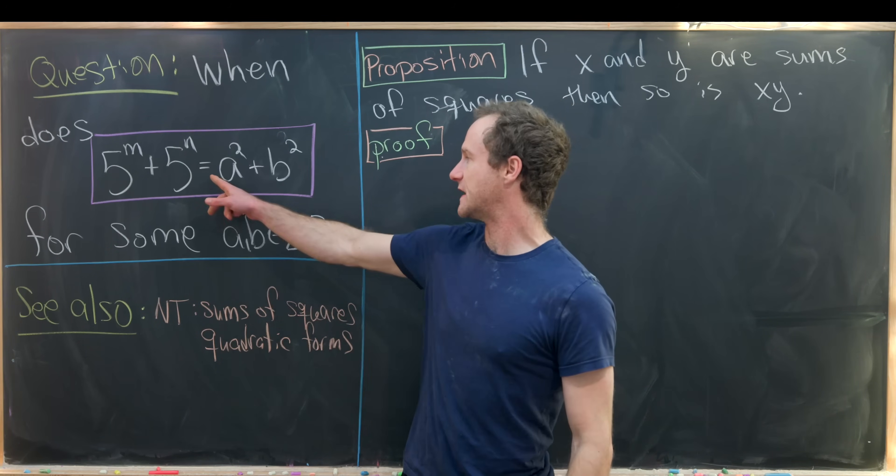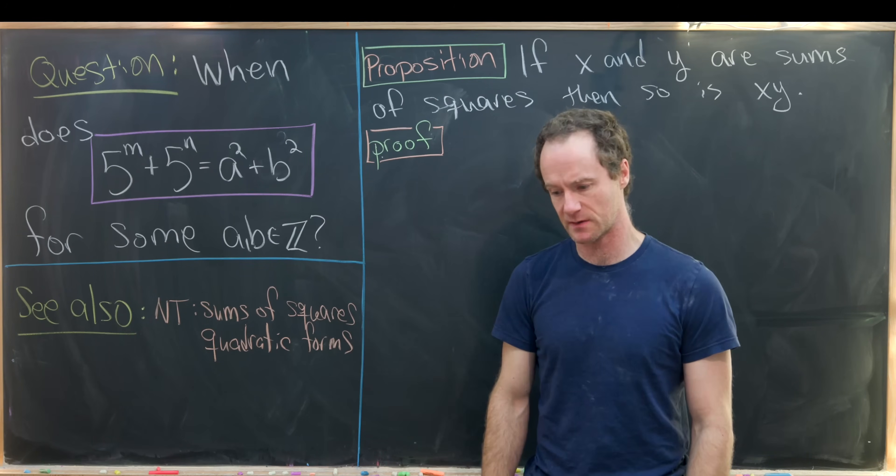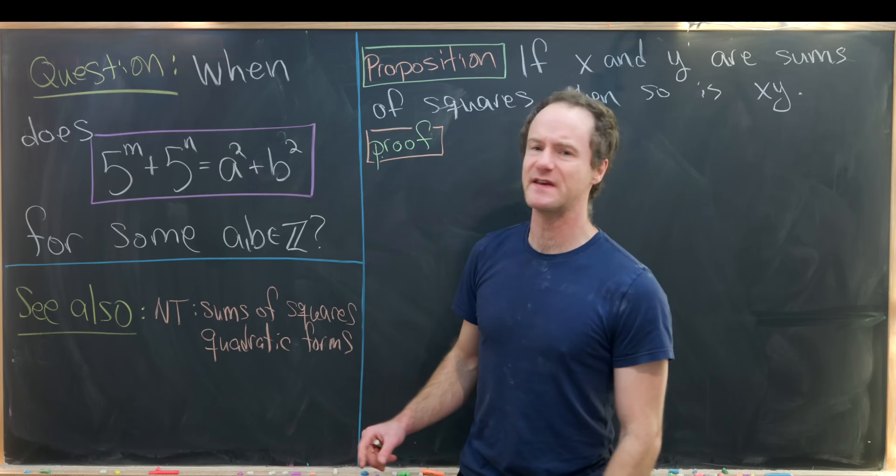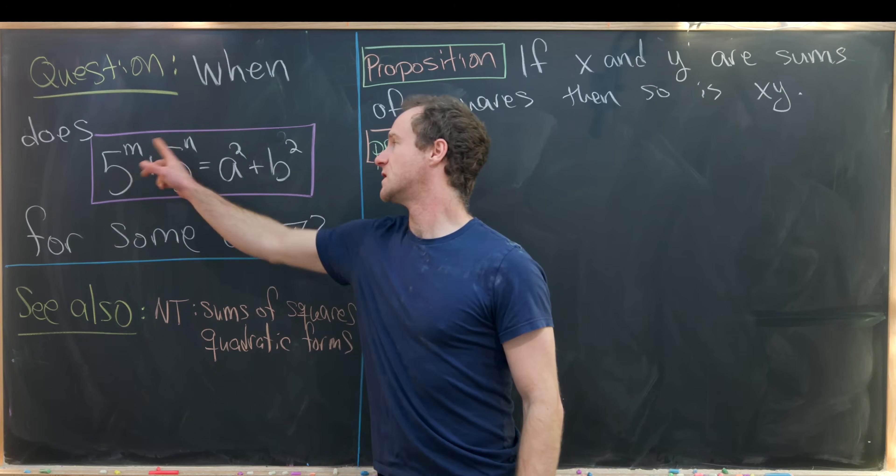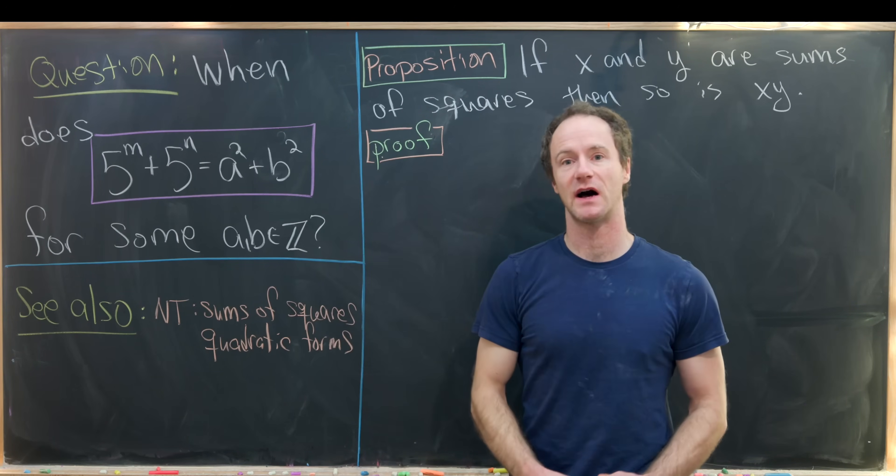In other words, when it equals a squared plus b squared for integers a and b. And to be a little bit more thorough, what I really mean by this is what are the rules governing the values of m and n that make this possible.